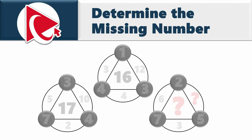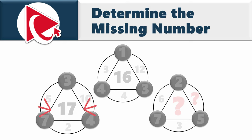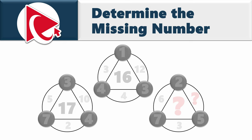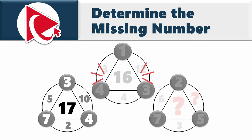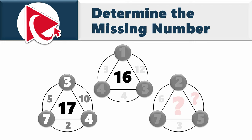You're presented with unusually looking shapes that have numbers inside. The middle number in the first shape is 17. Numbers in the small circle are 4, 7, and 3, and numbers inside the large circle are 10, 2, and 5. In the second shape, the middle number is 16. Numbers in the small circle are 3, 4, and 1, and numbers inside the large circle are 12, 4, and 3.